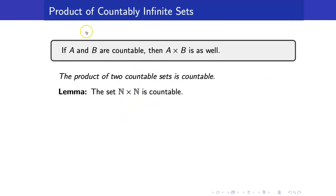Next, if A and B are countable, then their Cartesian product is countable as well. For the proof, I will assume both A and B are countably infinite and show the product is countably infinite. To prove this, we need the following lemma: the set N × N is countable.